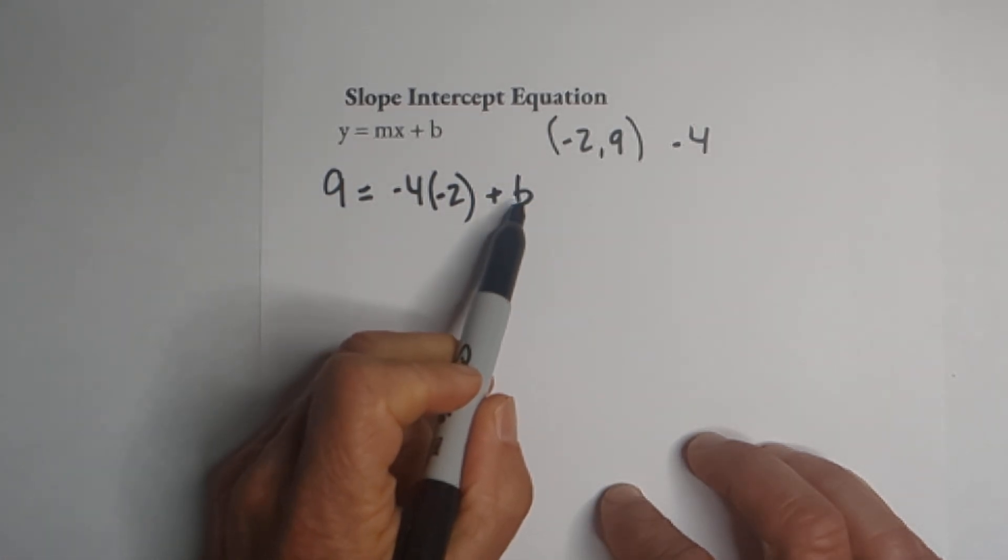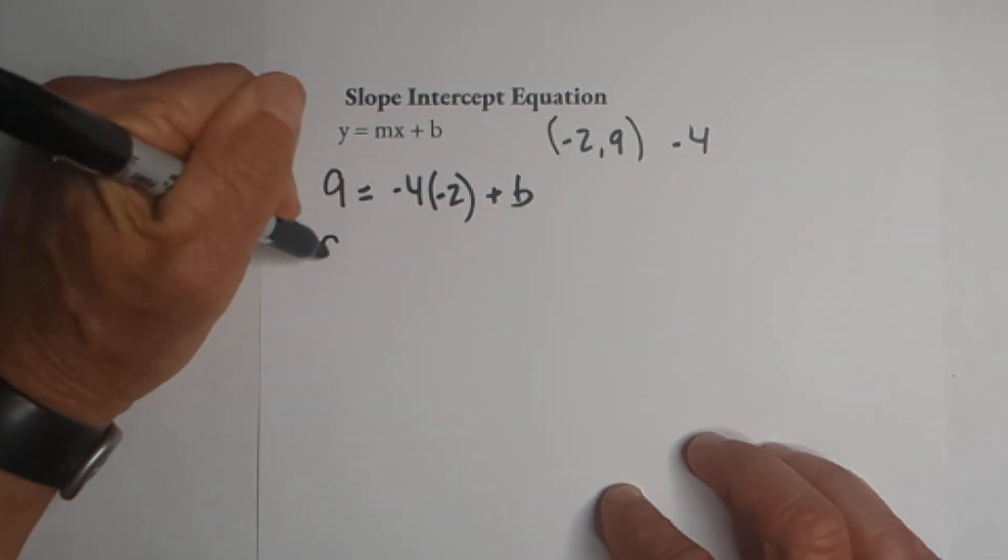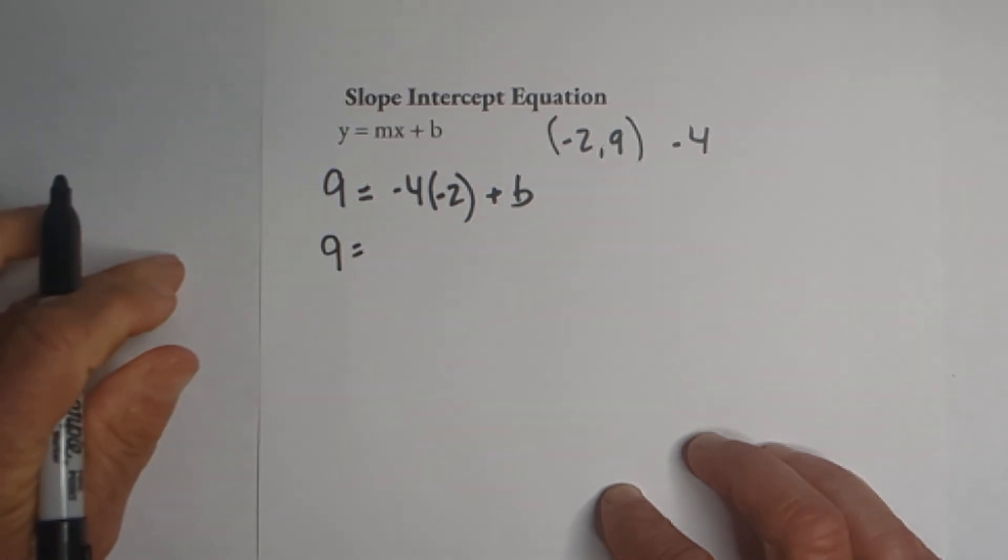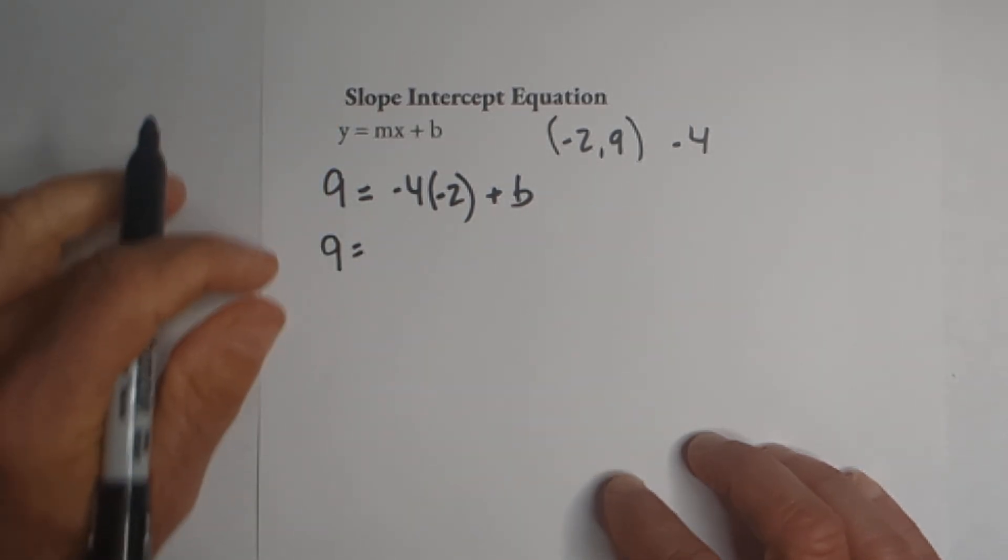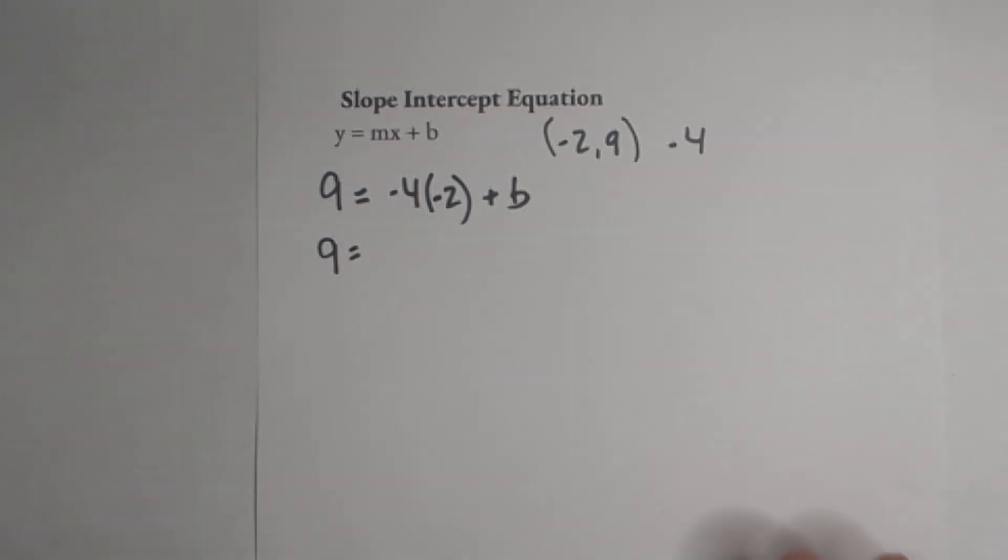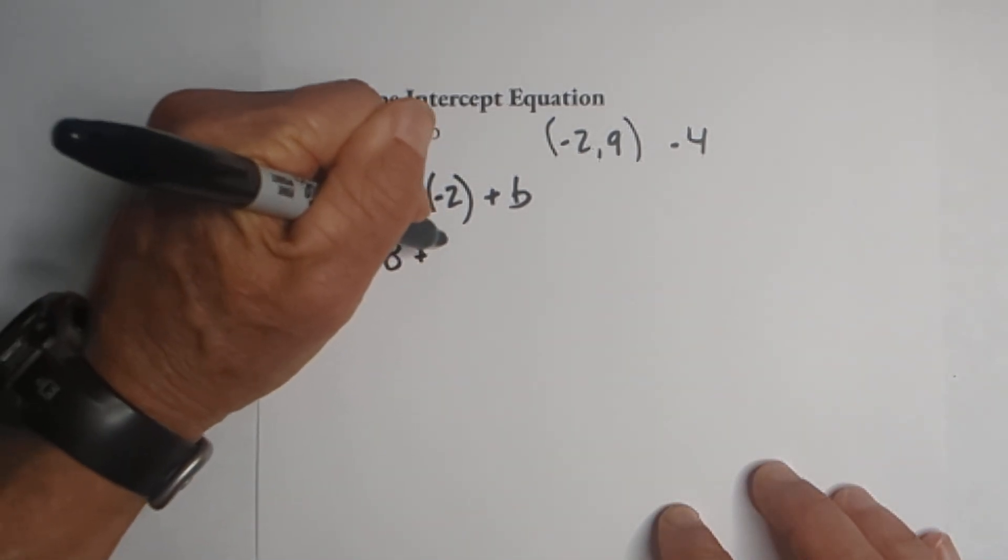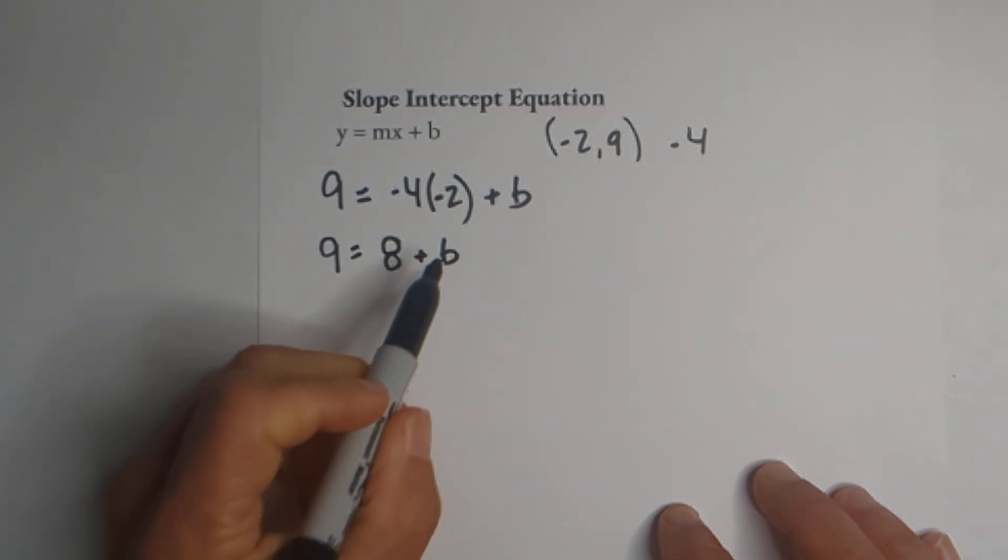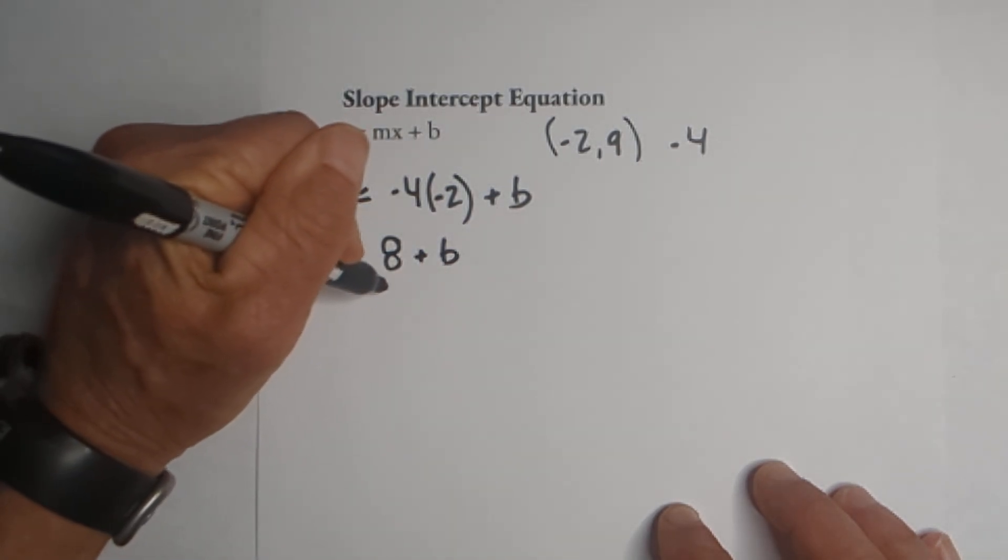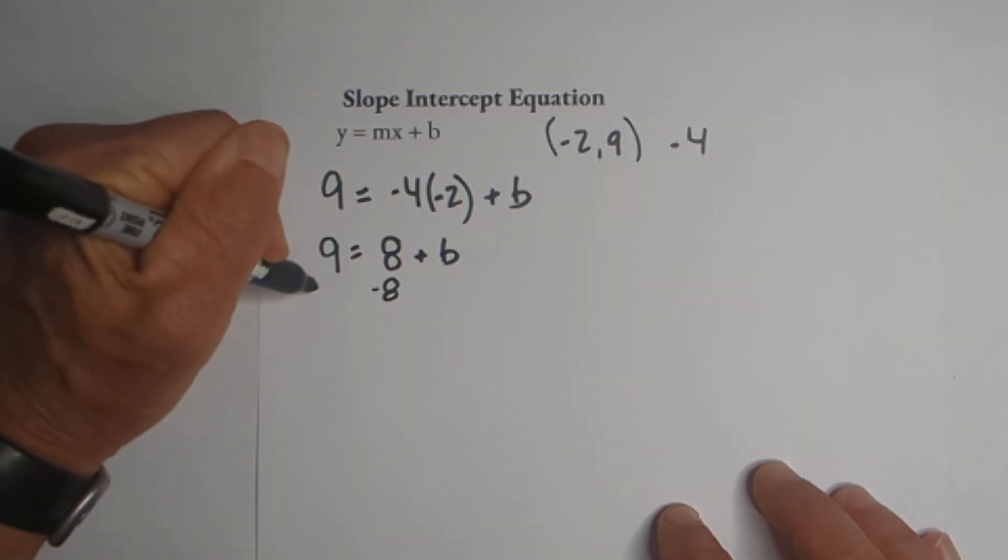So step one is we need to solve for b. So nine equals, we need to multiply the negative four and the negative two, that becomes a positive eight plus b. So now we need to get b by itself. We can do that by subtracting eight from both sides.